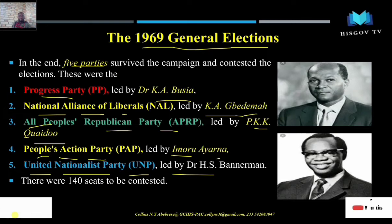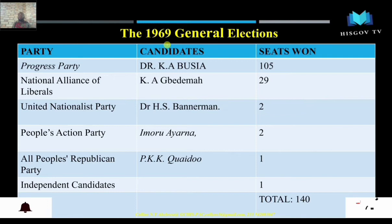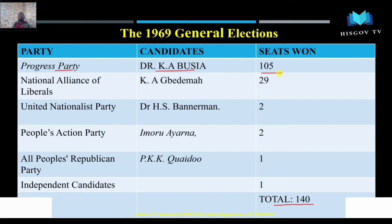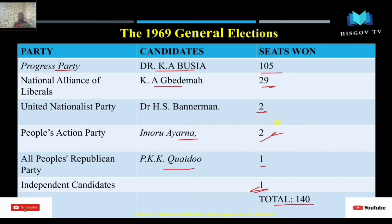Let's look at the outcome of the election. There were 140 seats to be won. The Progress Party led by Busia won massively with 105 seats — a landslide victory. Gbedemah's National Alliance of Liberals had 29 seats, Bannerman had 2 seats, Imoro Ayrana had 2 seats, Quaidoo had 1 seat, and an independent candidate also had 1 seat.